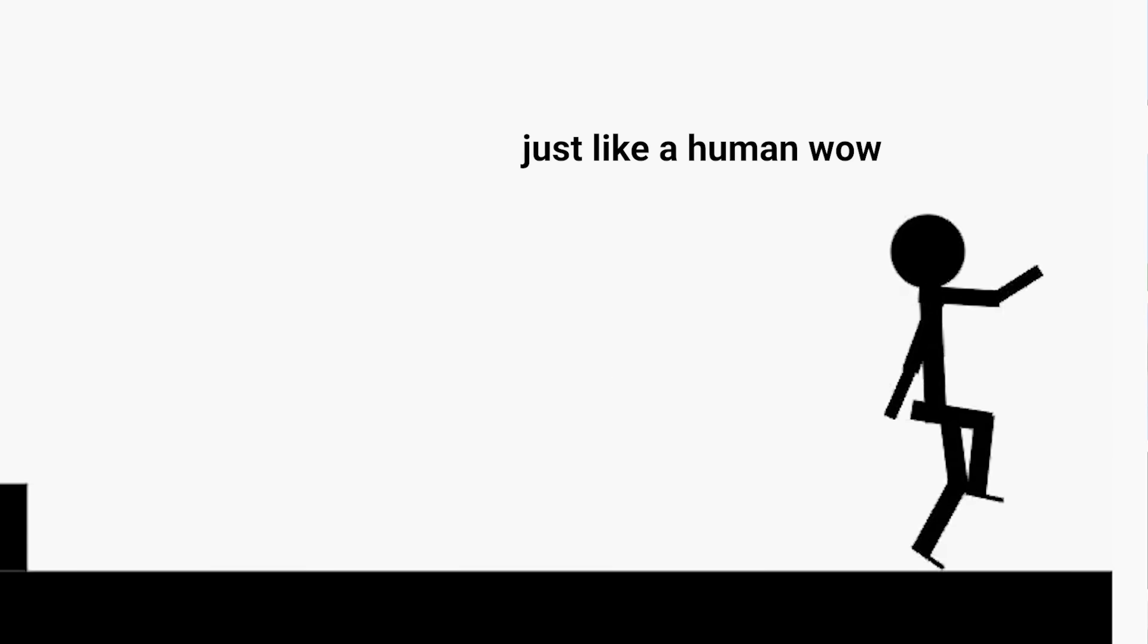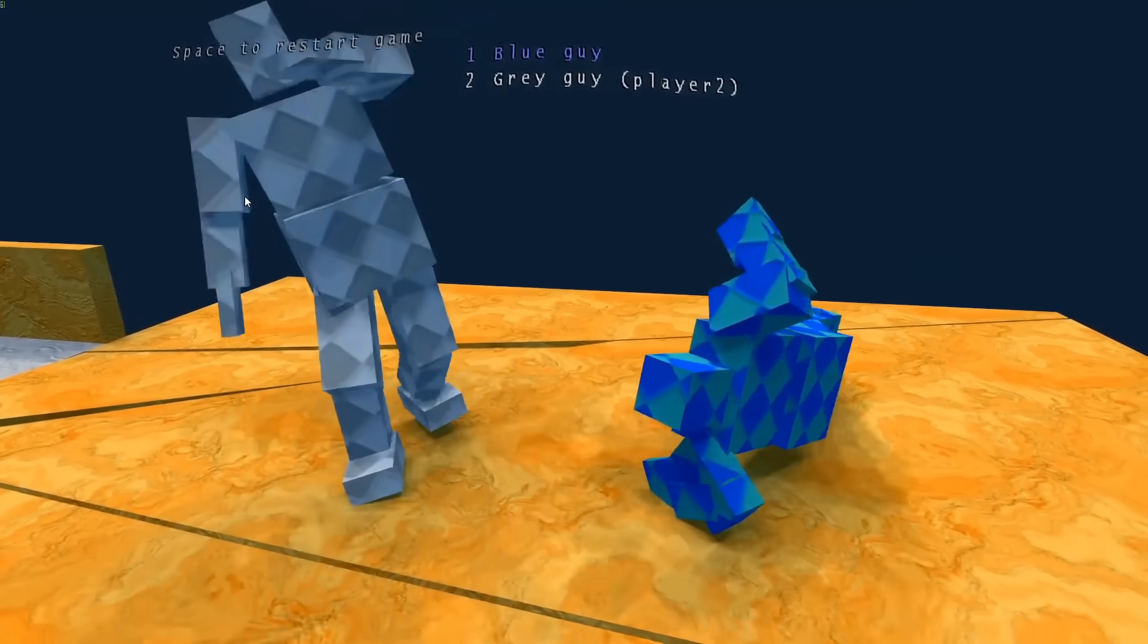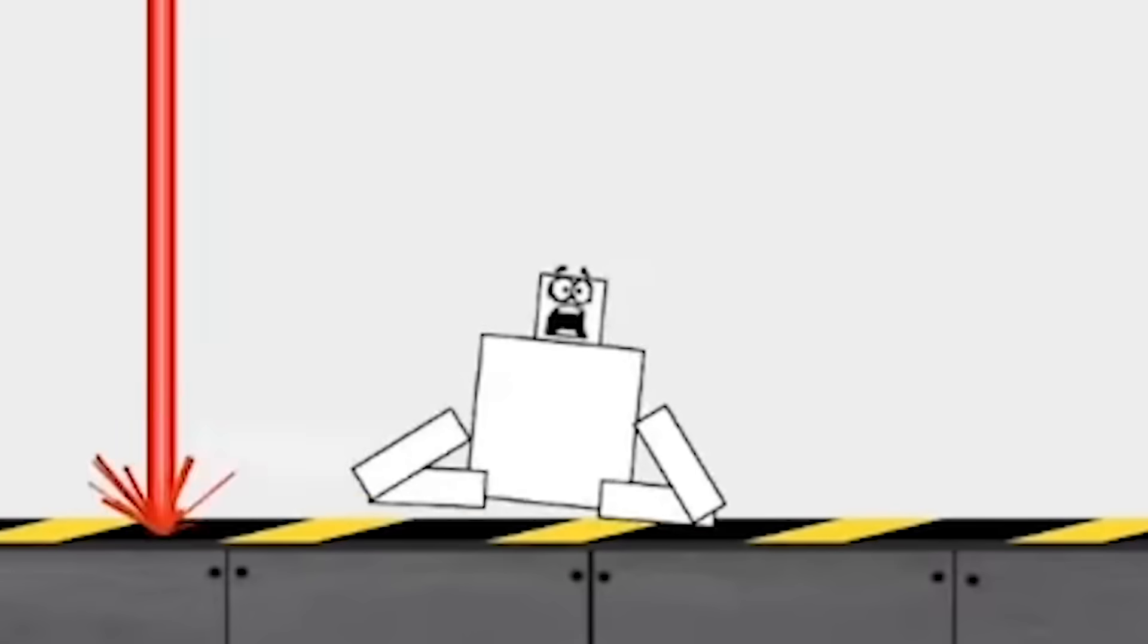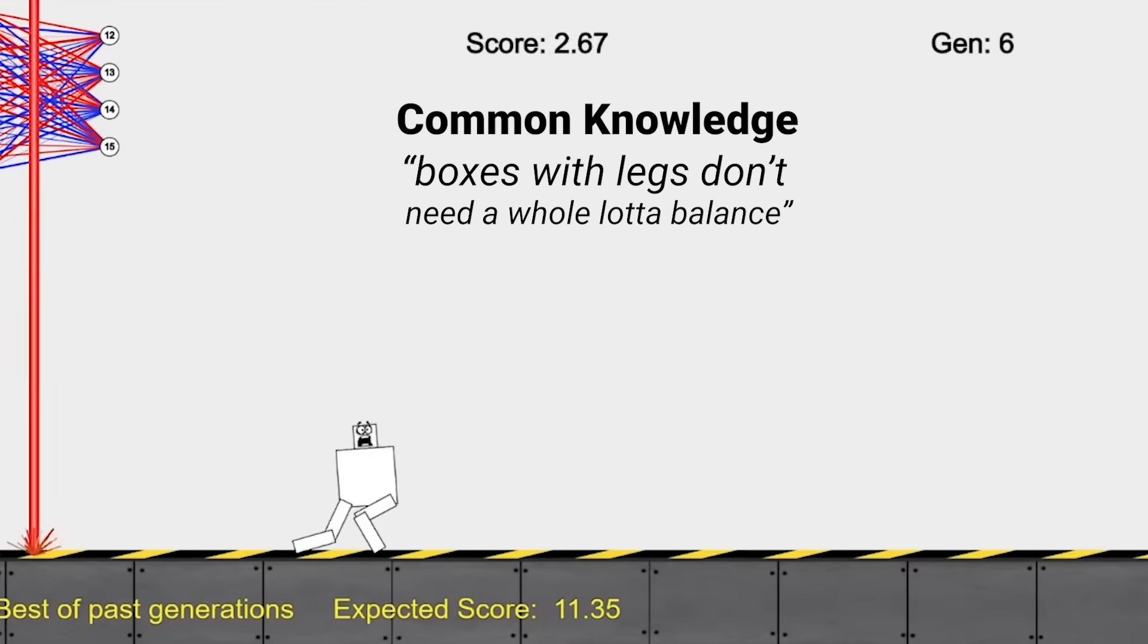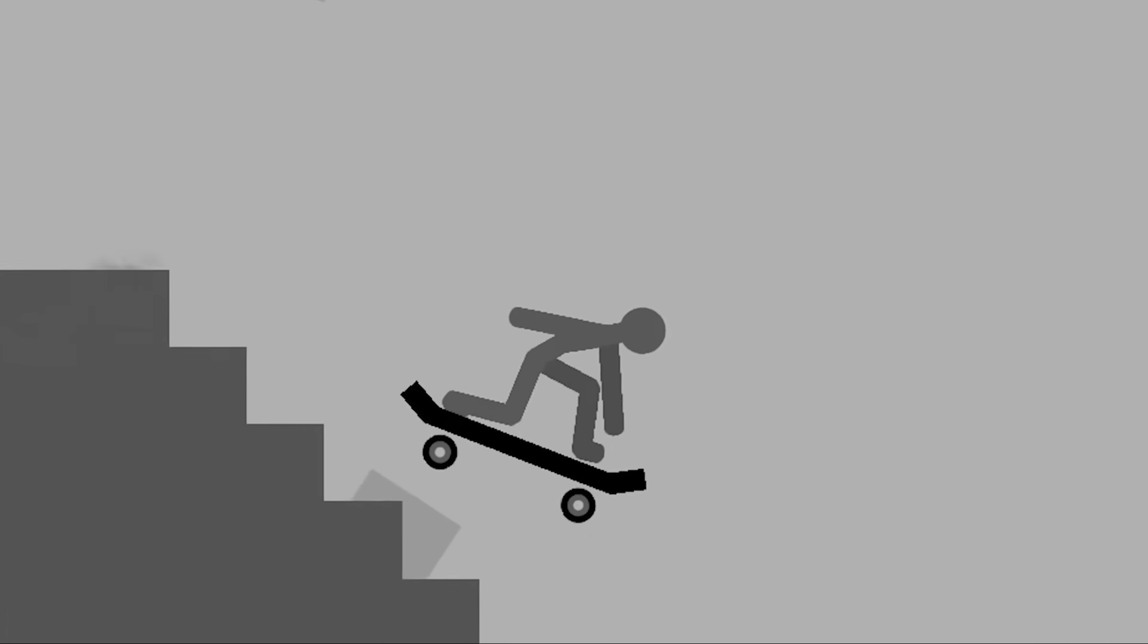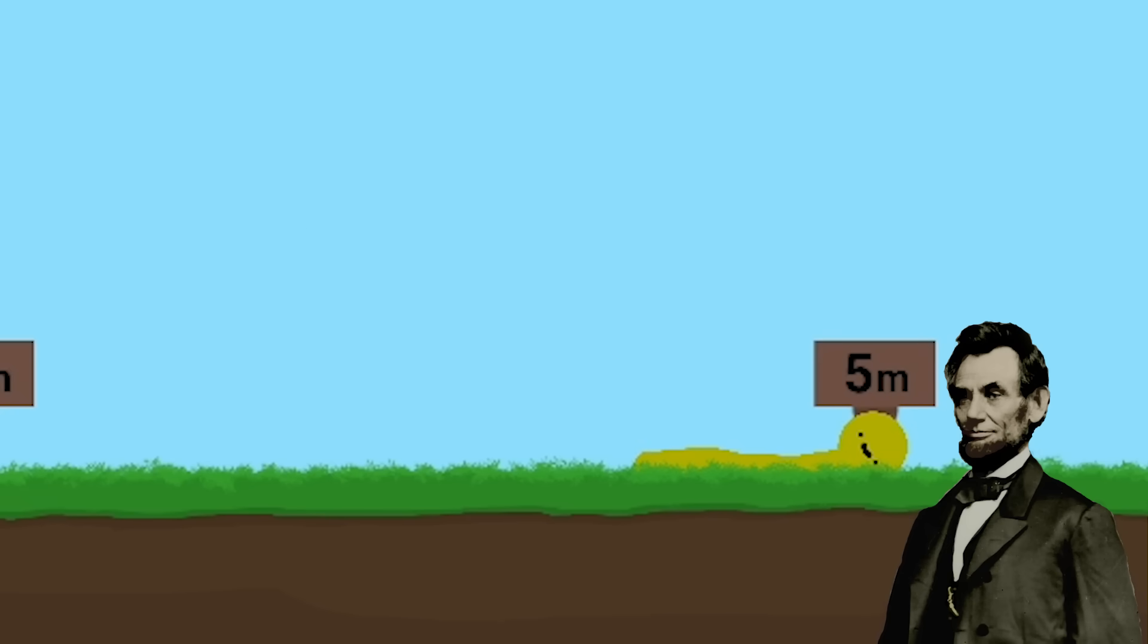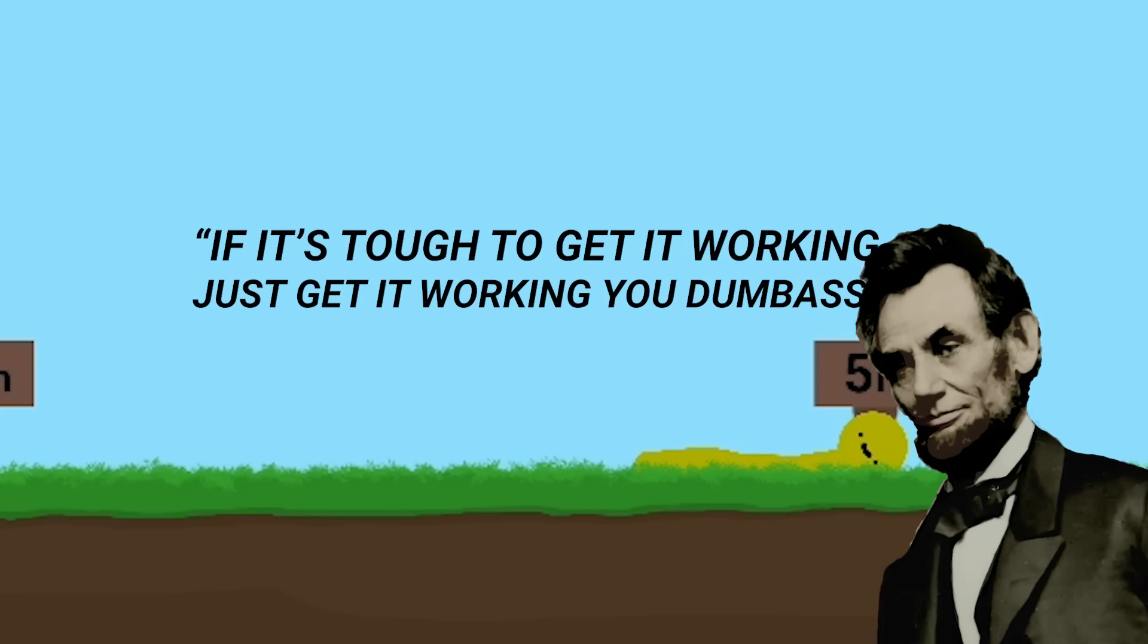I think the biggest challenge here will be for the stickman to balance itself. Not to take away from Mr. Code Bullet or anything, but let's be real here boys, that's just a box with legs and it's a known fact that boxes with legs don't need a whole lot of balance. So since we're working with a sloppy ragdoll here and not a box, we need to make it balance well so it doesn't fall over, which might be a bit tough to get working. But hey, like Abram Linkin once said, if it's tough to get it working, just get it working you dumbass.